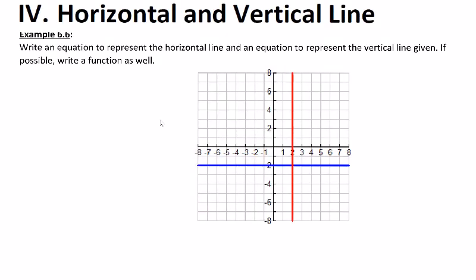In part four of section six we're going to look at two special types of line called the horizontal and vertical line.